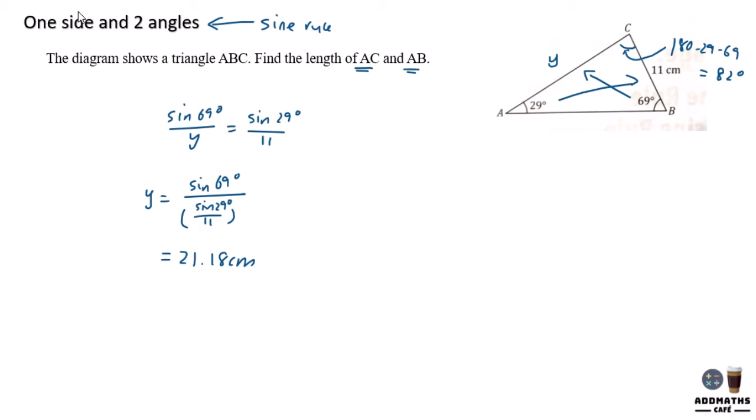Sine 29 is to 11 and sine 82 is to AB. So to find AB, use sine 82 divided by sine 29 over 11. So to find the answer, let's try it.